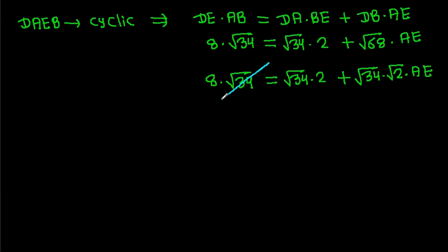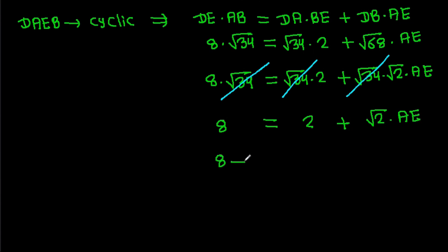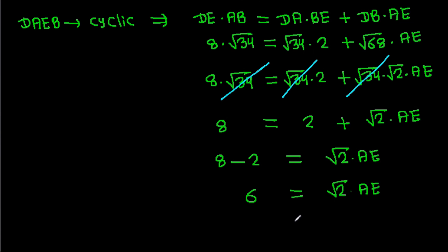The square root of 34 will get cancelled. So 8 equals 2 plus the square root of 2 times AE. Therefore 8 minus 2 equals the square root of 2 times AE, giving AE equal to 6 divided by the square root of 2.